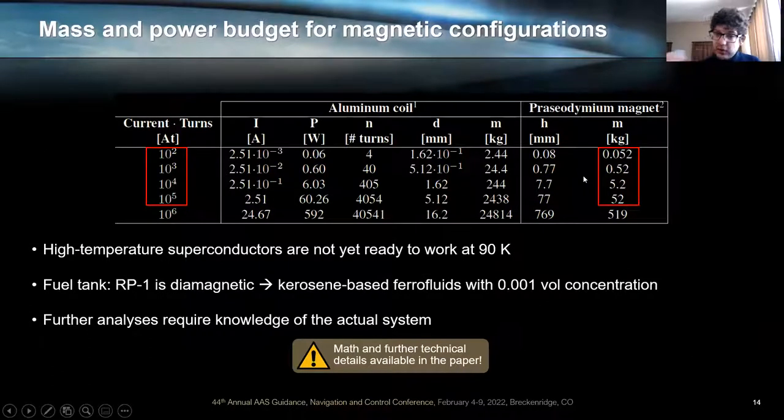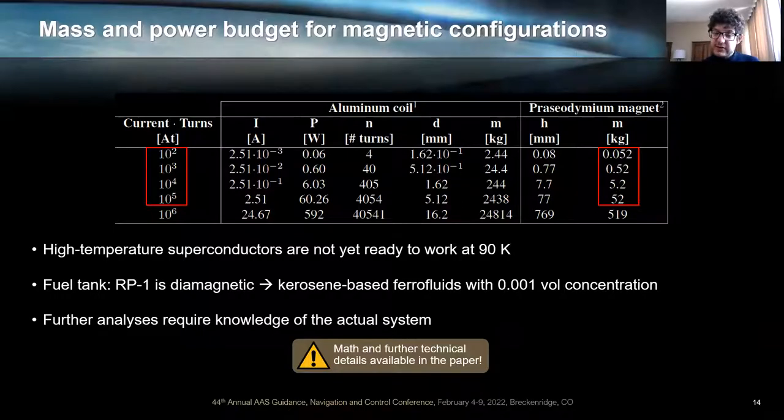You can see here that just a 5.5 kilogram magnet can hold the liquid against disturbing accelerations of 10^-4 meters per second squared, which means that this system will be able to hold the liquid against the microgravity environment of the launch stage. The mass and power budgets look as follows. We tested aluminum coils, which are more mass efficient than copper coils, and praseodymium magnets. Praseodymium is kind of similar to neodymium, but it works better for cryogenic temperatures like those of liquid oxygen. What you can see is that the praseodymium magnet beats the aluminum coil in all cases in terms of mass, is more mass efficient. And it can generate 52 kilograms, which is a lot, but it is not a lot if we compare it with existing systems. And with that, we can generate 100,000 ampere-turns of effective current.